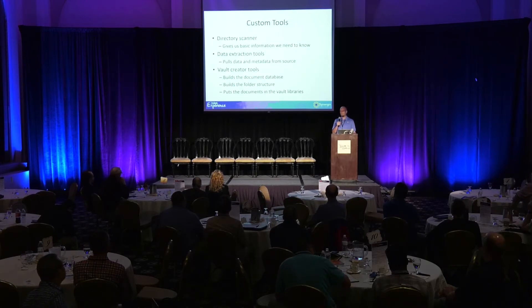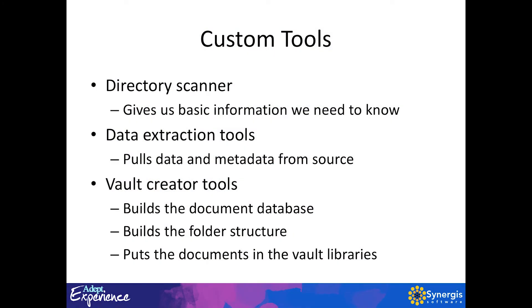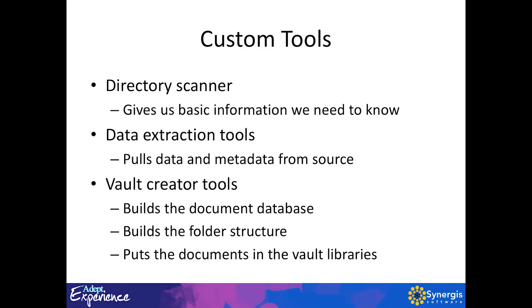Over time we've built up a repertoire of custom tools. We have a directory scanner — it's one of the first things that we send to you. We ask you to scan all the folders on your network that you could potentially bring into the system, which can be millions of documents in some cases. We also have data extraction tools — custom code that we've written to go into these databases, Excel spreadsheets, and files to identify important data, extract it out, and do something with it for you. We also have a vault creator tool, which puts all the new library structures in place and places all the documents one at a time in each folder so your library structure in your vaults is ready to go.